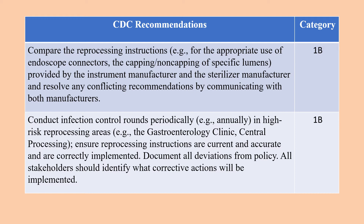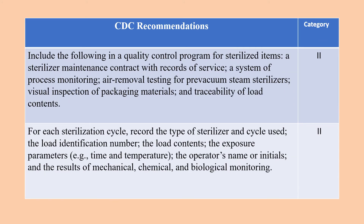Include the following in a quality control program for sterilized items: a sterilizer maintenance contract with records of service; a system of process monitoring, including air removal testing for pre-vacuum steam sterilizers; visual inspection of packaging materials; and traceability of load contents. For each sterilization cycle, record the type of sterilizer and cycle used, the load identification number, the load contents, the exposure parameters such as time and temperature, the operator's name or initials, and the results of mechanical, chemical, and biological monitoring.